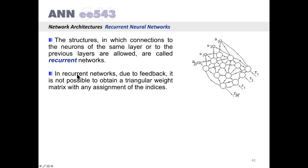The structures in which connections to neurons of the same layer or to previous layers are allowed are called recurrent networks. In recurrent networks, due to feedback, it is not possible to obtain a triangular weight matrix with any assignment of indices.